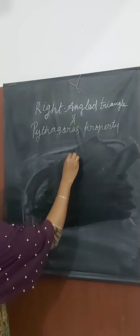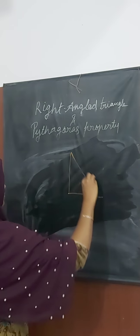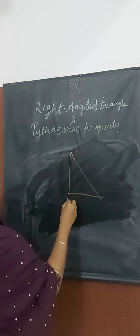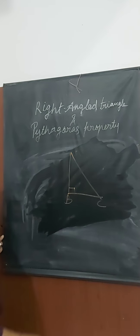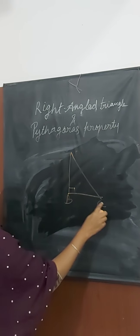For example, this is triangle ABC. Angle B is 90 degrees. Since angle B is 90 degrees, triangle ABC is a right angle triangle.